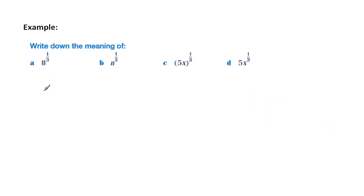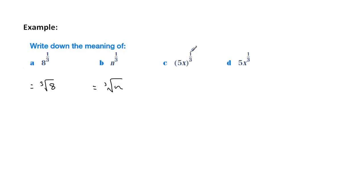Now, what do these expressions mean? This is just reversing our rule. So 8 to the third would be the cube root of 8, and n to the third would be the cube root of n. Notice that 5x is in the brackets, so the third influences both of those — it would be the cube root of the whole of 5x.